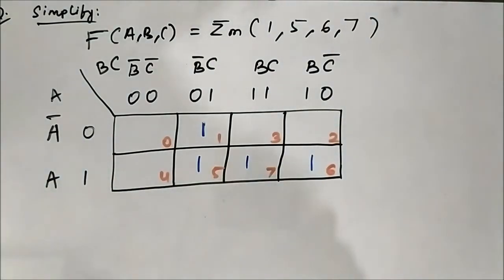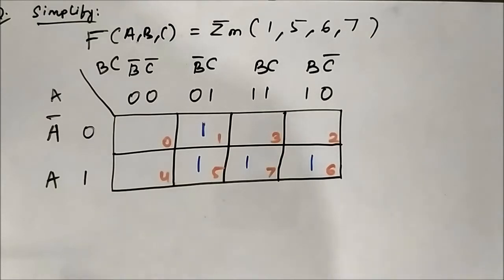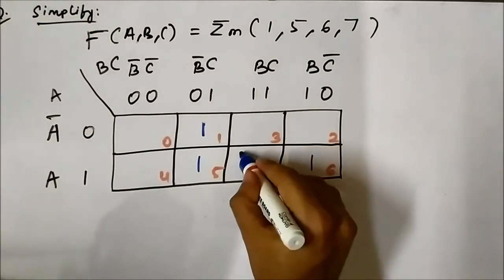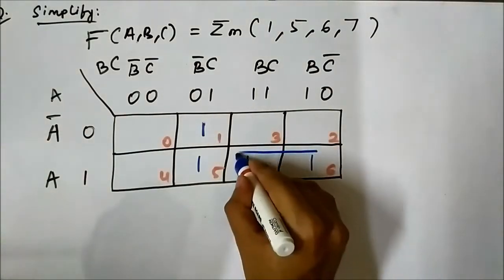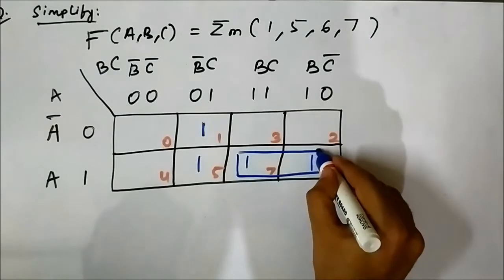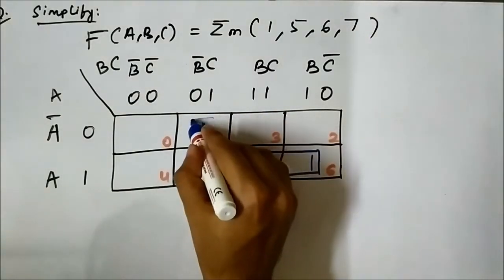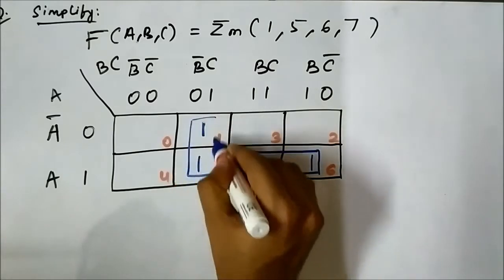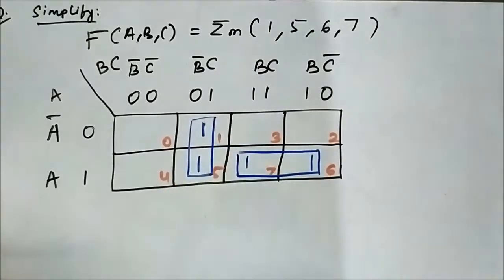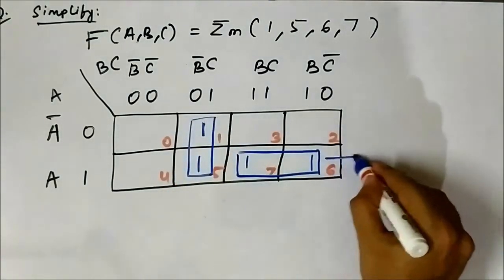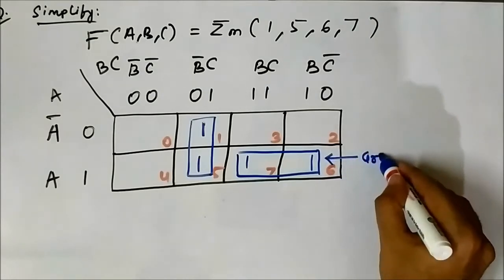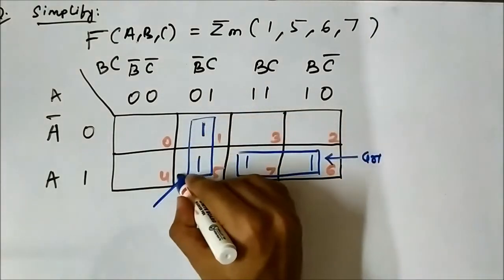So here, how can we form the group? We can combine these 2 cells to form a pair, and we can combine these 2 cells to form another pair — 2 groups, Group 1 and Group 2.